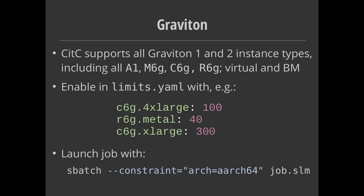You can also specify specifically that you want, for example, an r6g.metal instance type with a similar kind of constraint. This allows easy benchmarking and comparisons to be done across your workloads — this is how we've done our benchmarking by creating a cluster with all these different instance types and submitting jobs with all these different constraints.